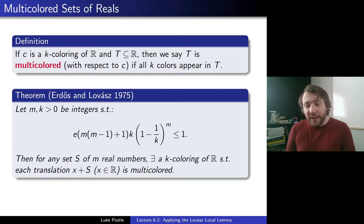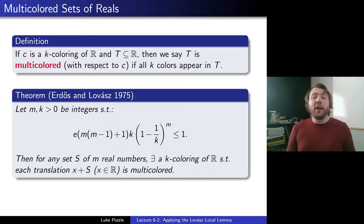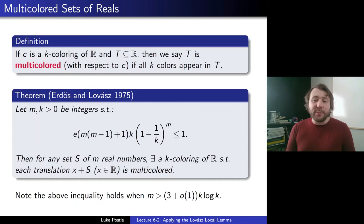For every real there are infinitely many translations, and we're trying to get a condition on all of them. This seems a bit hard, but we're going to do it. We note that the inequality holds when m is bigger than about (3 + something)·(1/k)·log k. So if m is about k·log k, so the number of colors is more like m/log m, then indeed we'll be able to do this.